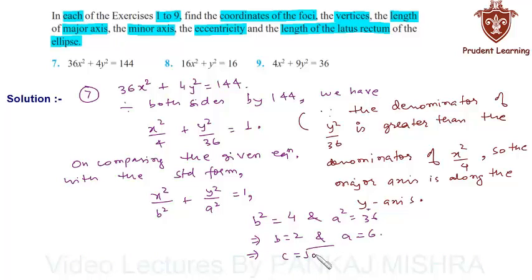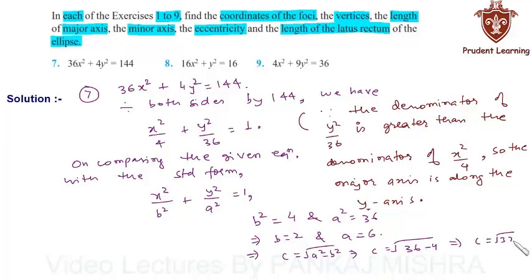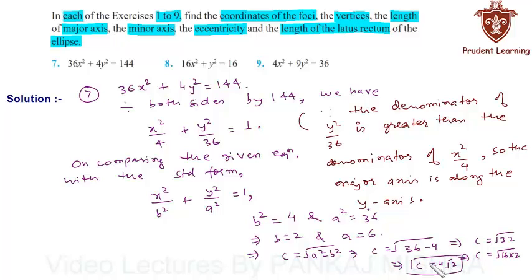Now, using the formula c = √(a² - b²), we have c = √(36 - 4) = √32, which can also be written as c = 4√2. So here we have a = 6, b = 2, and c = 4√2.